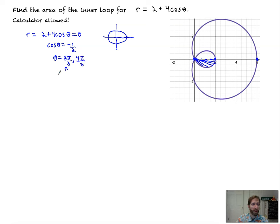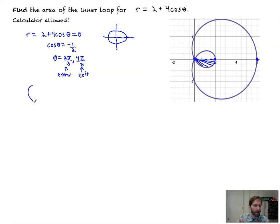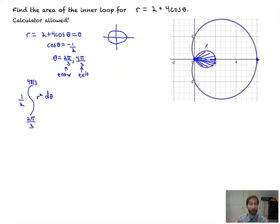That means we enter the inner loop at two pi over three and exit at four pi over three. If we're not using symmetry, we use the normal formula one-half r squared d theta, with the first angle two pi over three and exiting at four pi over three. That simplifies to one-half the integral from two pi over three to four pi over three of (2 plus 4 cosine theta) squared d theta. We'd use a calculator to evaluate that.